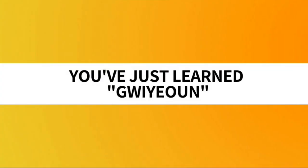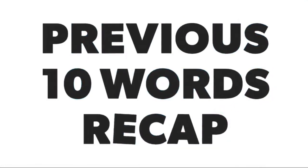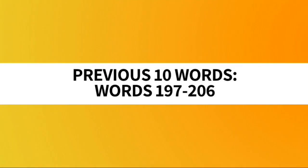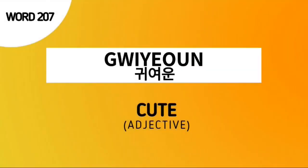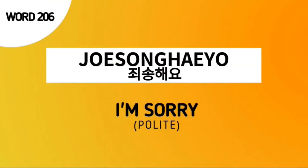And with that, you've just learned kyoun. Now let's proceed to the previous 10 words recap. The previous 10 words are words number 197 to 206. Don't forget our word for today — word number 207, kyoun, which means cute.